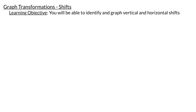In this video we are going to start our discussion on graph transformations. Graph transformations are operations that we perform on a function that leads to a certain change in the graph. There are two main types of transformations: shifts and scales. Shifts move a graph in some direction, and scales stretch or compress a graph in some way. This video will be an introduction to shifts — we'll look at some examples of shifting and generalize what we observe.